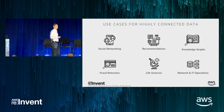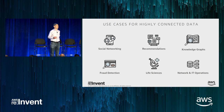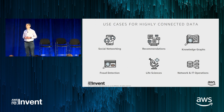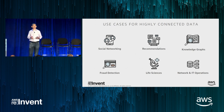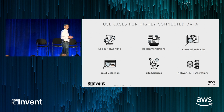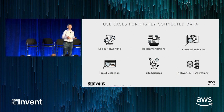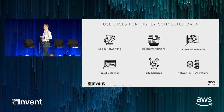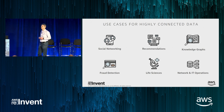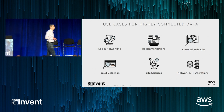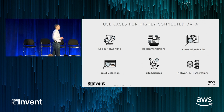In Andy's keynote on Wednesday, he talked about highly connected data. We talk a lot about data and data proliferation — there's more and more data out there. But one thing we've really failed at exploiting are the connections between data. What you find is that there are a lot of use cases where the richness and interesting patterns relate more to the connections between data than the data itself.